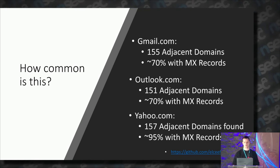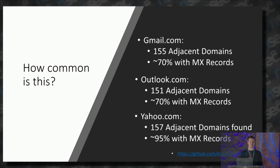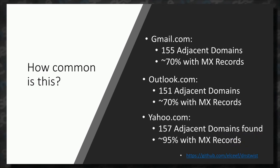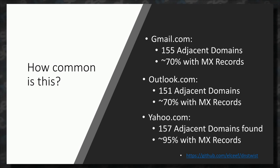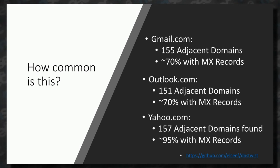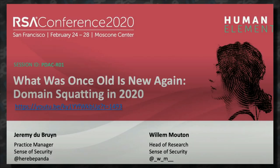How common is this? I only registered 12 domains but there are a lot of squatted variants out there. Looking at three examples: Gmail.com has 155 adjacent domains registered, and about 70 of them have active MX records. Outlook.com has similar stats. Yahoo has been around longer and is more highly targeted. That's a lot of potential for theft, and we don't know who's behind these domains. When I looked at many of them, they share the same IP address — so one has to wonder who's listening and who's receiving those emails.